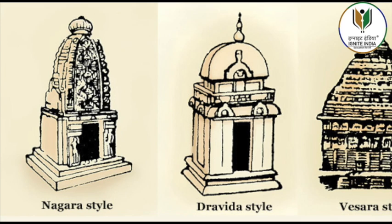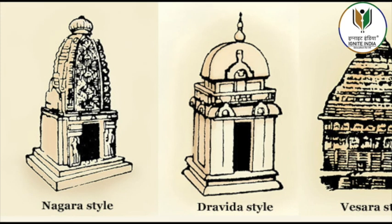One of the most important sculptures at the site is of Nataraja, surrounded by larger-than-life-size depictions of the sapta-matrikas, three to Shiva's left and four to his right.